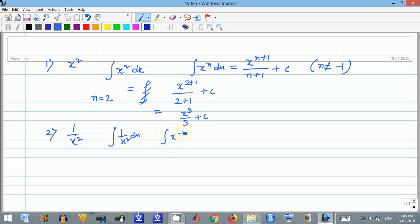This dx equals x to the power minus 2 plus 1, divided by minus 2 plus 1, plus c. That equals negative 1 by x plus c.